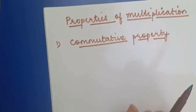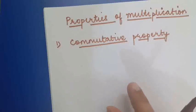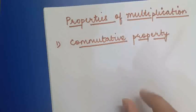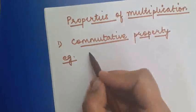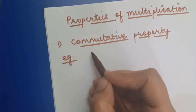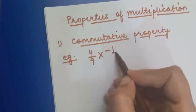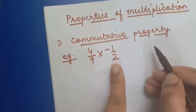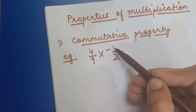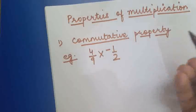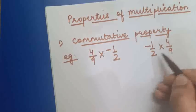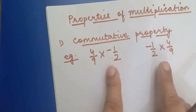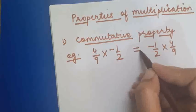The commutative property says that if we change the order of multiplication of two rational numbers, it won't affect the result. For example, if I write 4 upon 9 into minus 1 upon 2, I am multiplying these two rational numbers. If I change the order — writing minus 1 upon 2 before 4 upon 9 — the result in both cases will remain the same. That is the commutative property.